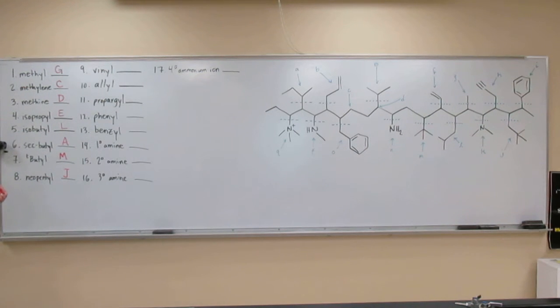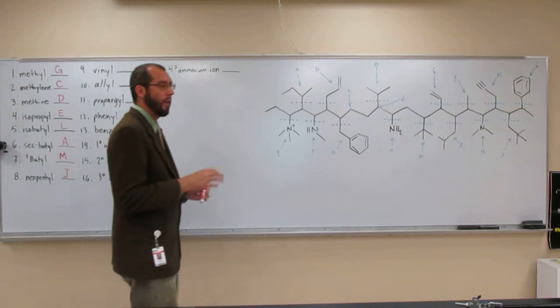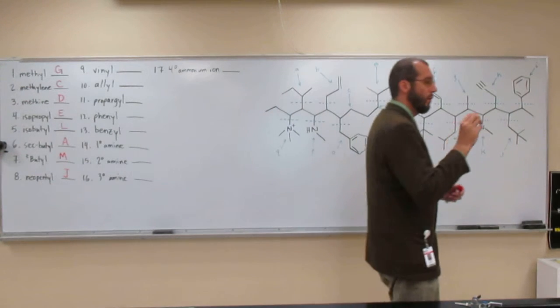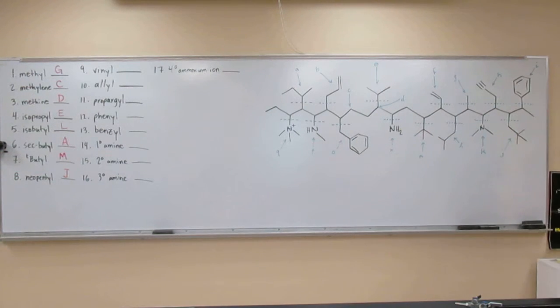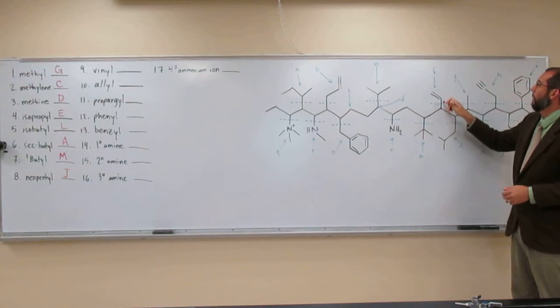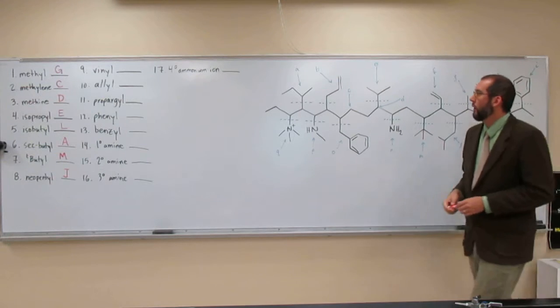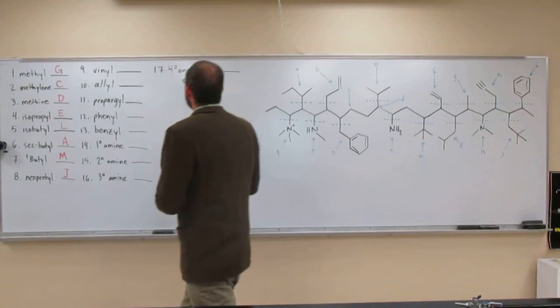A vinyl group is where the double bond is connected directly to the substituent or main chain. So if you have a double bond where one of the carbons is connected directly, that's a vinyl group. So that's F.